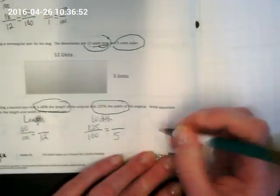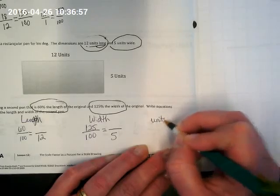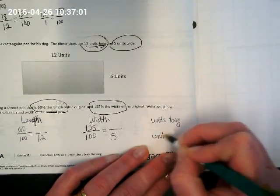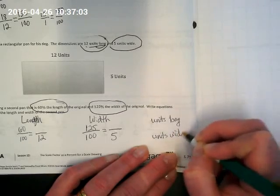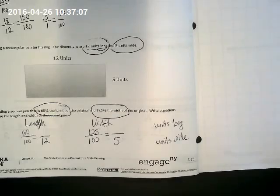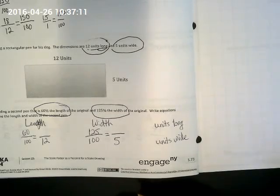Which I want to remind you, you need to write with units long and units wide. Our problem is not telling us if he's measuring in feet or meters. We don't know what the unit is, but we still need to label it with units.